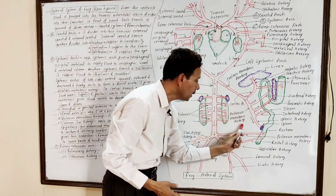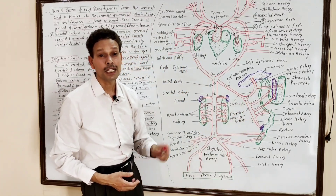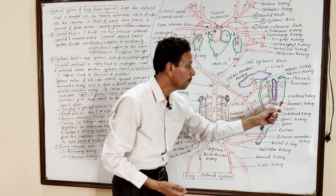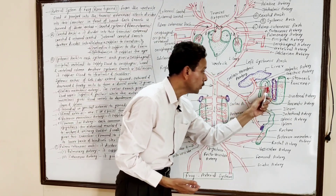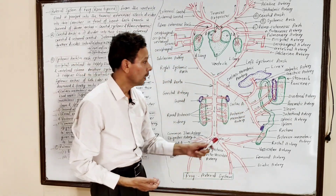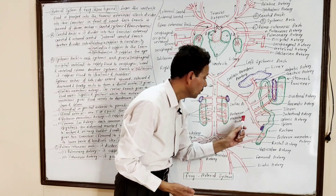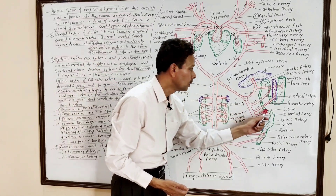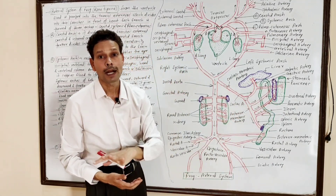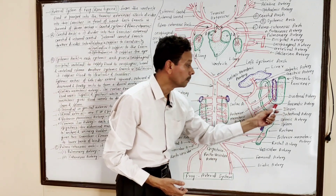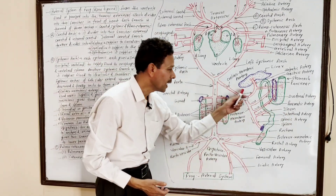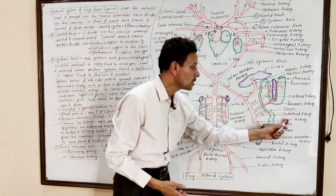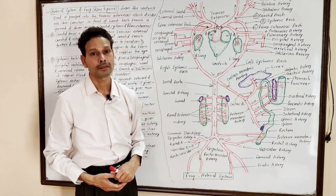The celiac artery gives blood to the liver through the hepatic artery and to the stomach through gastric arteries. The anterior mesenteric artery supplies blood to the pancreas through the pancreatic artery, to the duodenum through the duodenal artery, to the lower parts of the small intestine (ileum) through the intestinal artery, and to the spleen — the blood bank of the body — through the splenic artery.